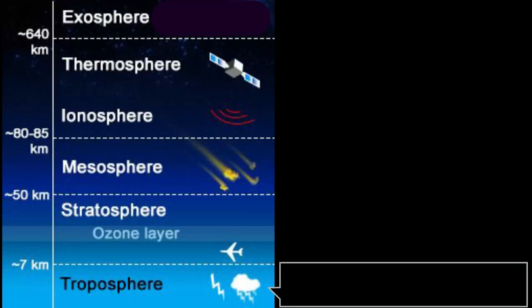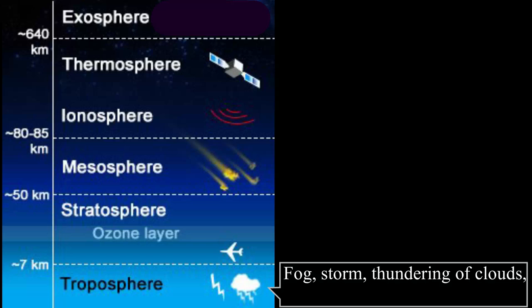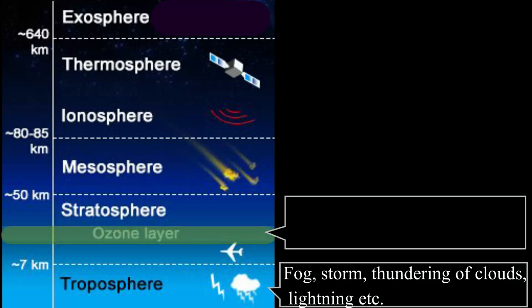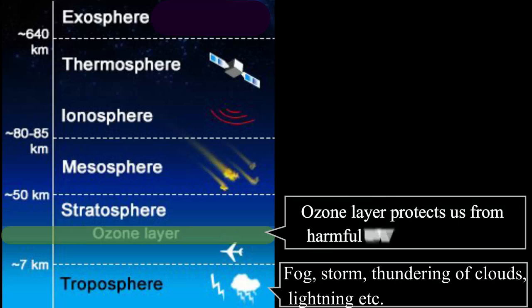Phenomena like fog, storm, thundering of clouds, lightning, etc. occur in the troposphere. The ozone layer is found in the stratosphere, which protects us from the harmful ultraviolet rays of the sun.